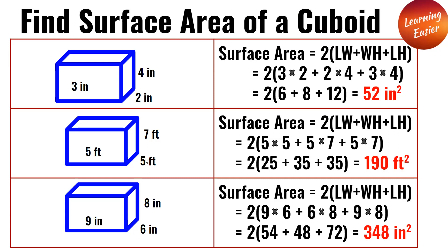The second cuboid: the length, width, and height are 5 feet, 5 feet, and 7 feet. 2(5×5 + 5×7 + 5×7). 5 times 5 is 25, 5 times 7 is 35. 2(25 + 35 + 35) is equal to 190 feet squared.